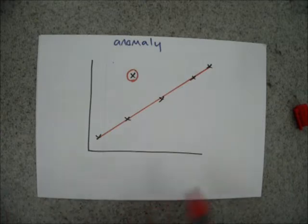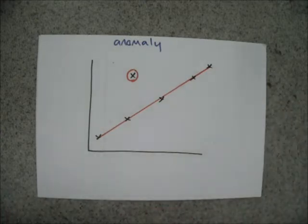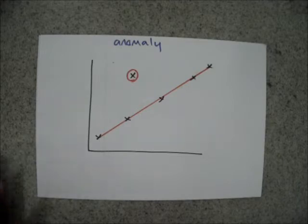Like so. The circle indicates to anybody reading your graph, that you're treating it as an anomaly, and you haven't missed it out by accident.